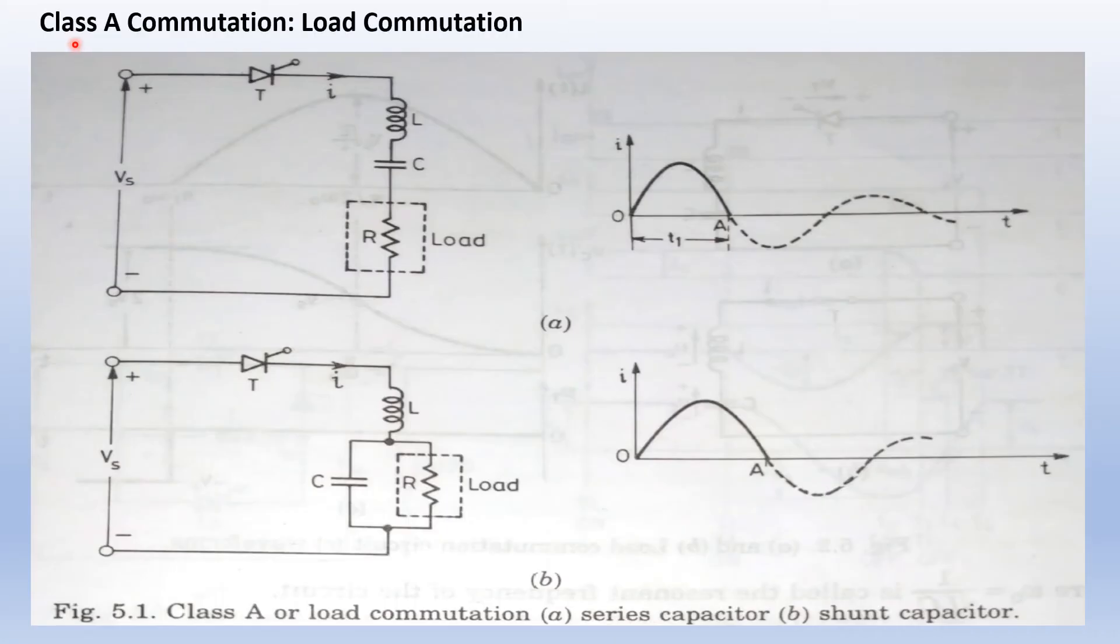The circuit diagram for Class A commutation or load commutation is as shown in the figure. For achieving load commutation of a thyristor, the commuting components L and C are connected as shown in the figure.